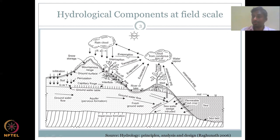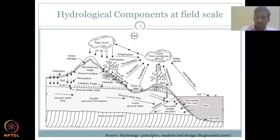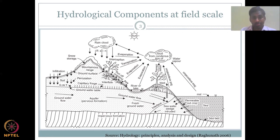This is a different hydrological cycle figure. The most important part is the driver, which is the sun. You have evaporation from your lakes, stagnant water bodies, rivers, and oceans. Water vapor cools down and forms clouds as part of condensation, and further condensation and cooling produces rainfall — that is where this arrow is connecting.